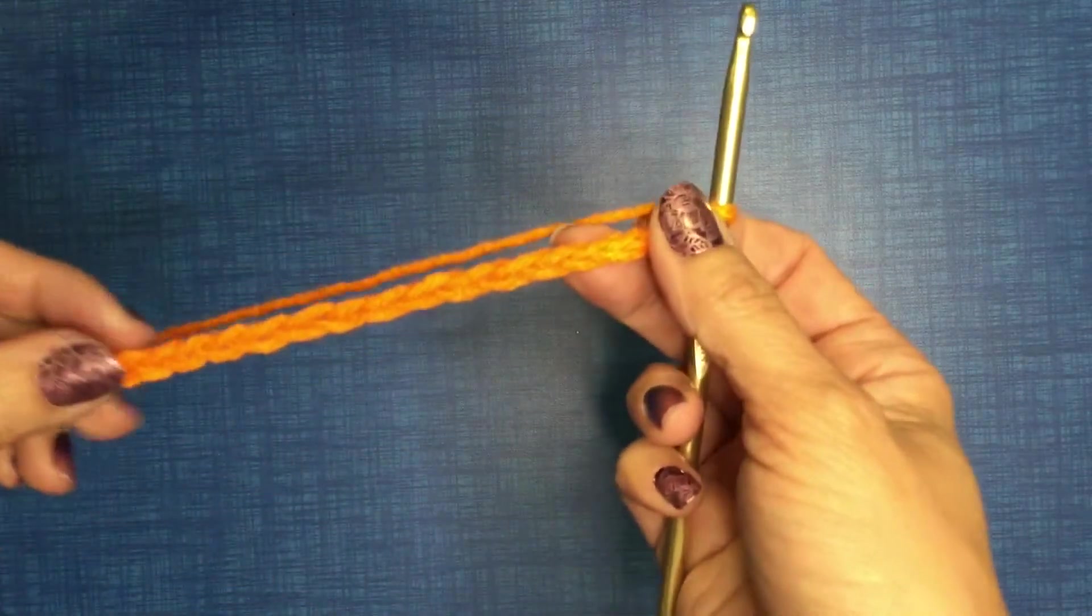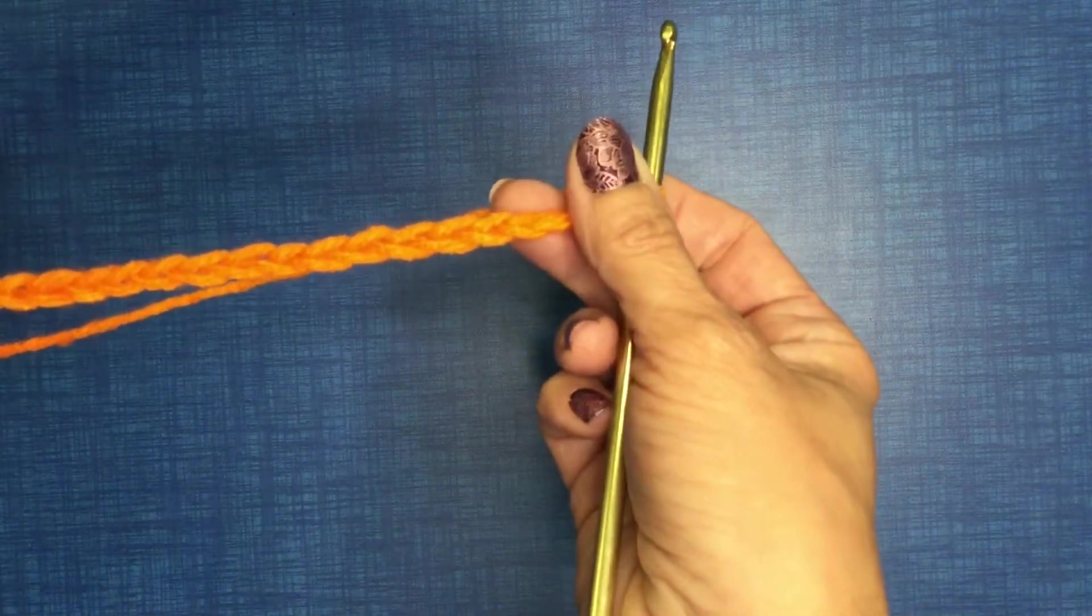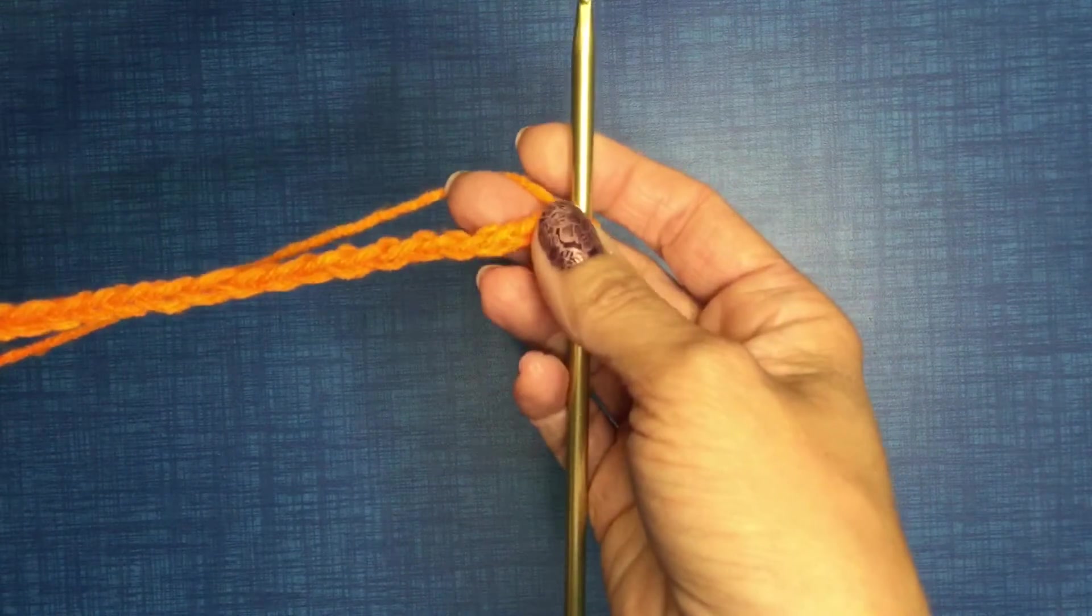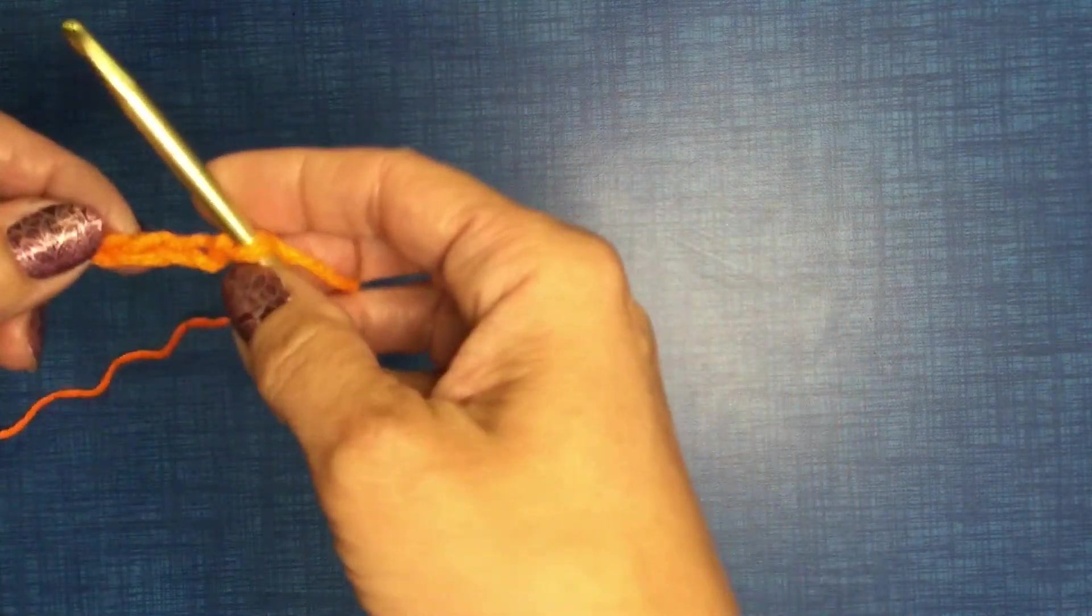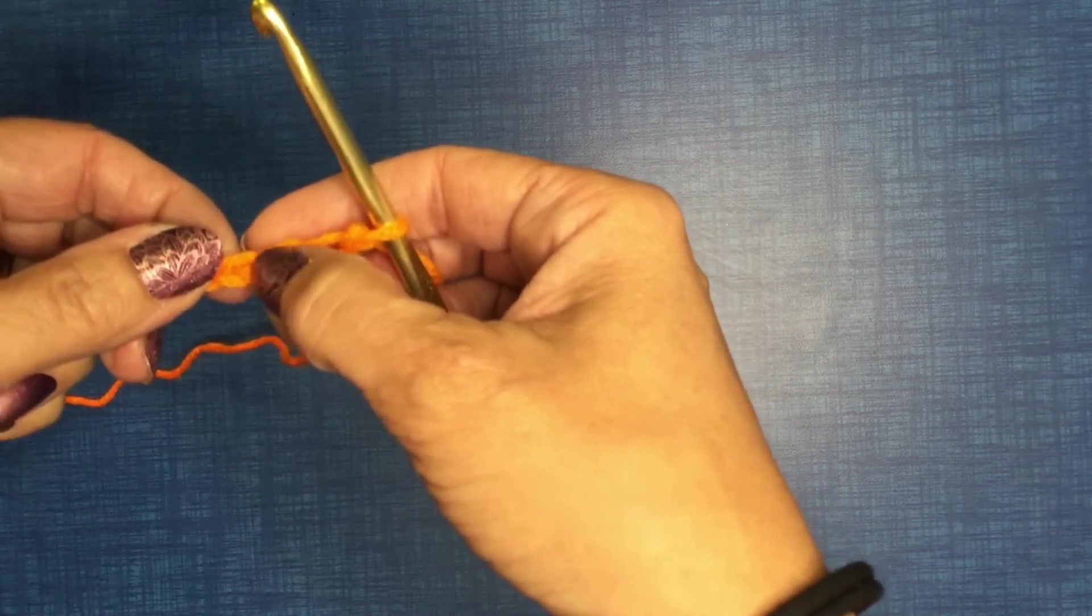Okay, you want your chain to look pretty even. So some reminders about what a chain really looks like. On top it looks like a V.